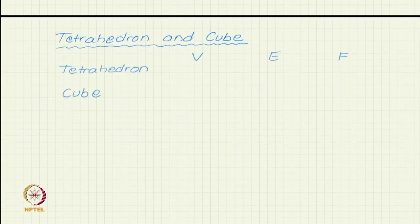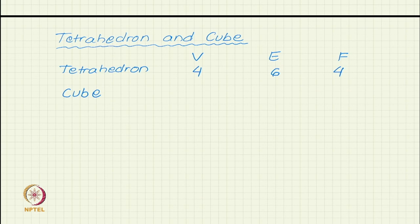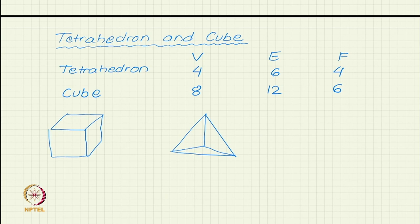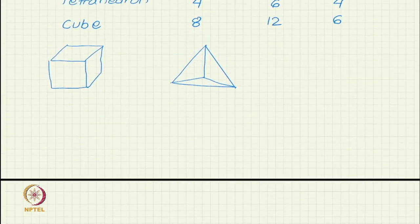Tetrahedron and cube are related. The tetrahedron has four vertices, six edges, and four faces. The cube has eight vertices, twelve edges, and six faces. If you draw them independently they do not appear to be related, but they have a very interesting relationship. What is the relation? How is tetrahedron related to cube?